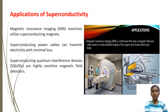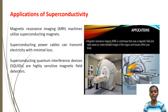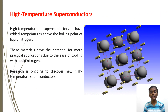Applications of superconductivity: superconducting magnets are used in MRI machines. The high magnetic fields produced by superconducting magnets allow for detailed imaging of the human body, providing better image quality and higher resolution compared to conventional magnets. Superconducting power cables can transmit electricity with minimal loss. High-temperature superconductors have a critical temperature above the boiling point of liquid nitrogen, minus 196 degrees Celsius, offering the potential for more practical applications due to the ease of cooling with liquid nitrogen.